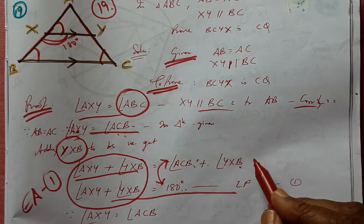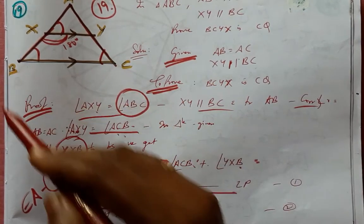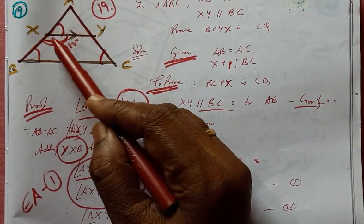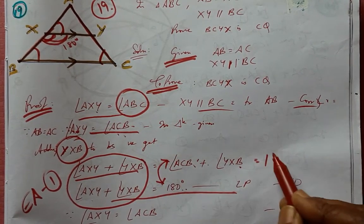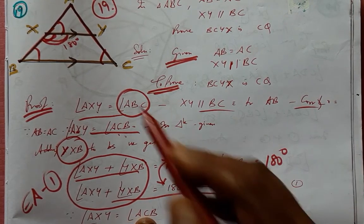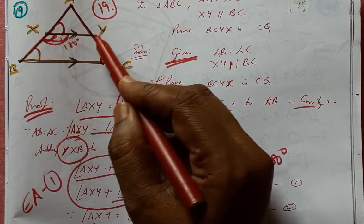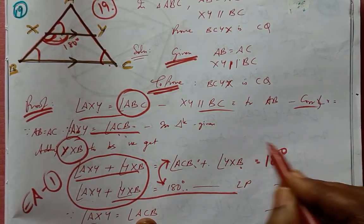Therefore the sum of these opposite angles equals 180 degrees. If opposite angles sum to 180, then XYCB is a cyclic quadrilateral.